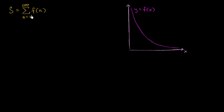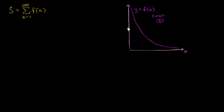Let's say S is the value that this infinite series converges to. We're going to assume that this series actually converges, and that each term is a function of n. We're going to assume this is the same type of series we looked at when we looked at the integral test — namely that this function is a continuous, positive, decreasing function over the interval that we care about.